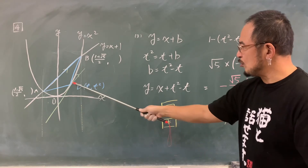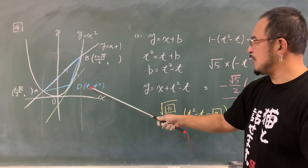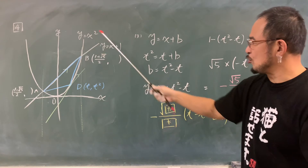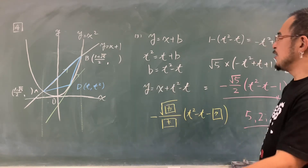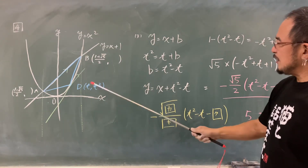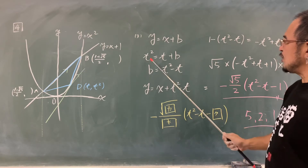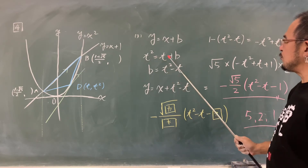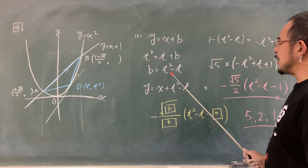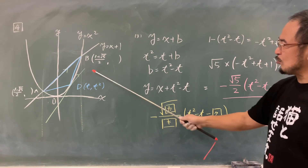Tコンマ、T²、ここに代入、T²イコールT+B、Bは、T²マイナスT。これが切片です。したがって、この緑で書いた線ですが、YイコールX+T²-T。そうすると、ここの座標が、0コンマ、T²-T、という座標です。